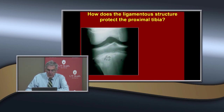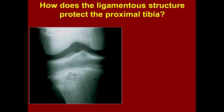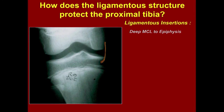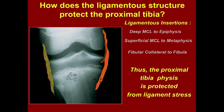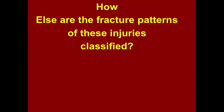How do the ligaments protect the tibia? Where are they attached? Mostly to the metaphysis. The deep medial collateral ligament attaches to the epiphysis, but it's not very strong. The main superficial medial collateral attaches to the metaphysis. On the lateral side, the fibular collateral attaches to the fibula. Result: the proximal tibial physis is protected from ligament stress.